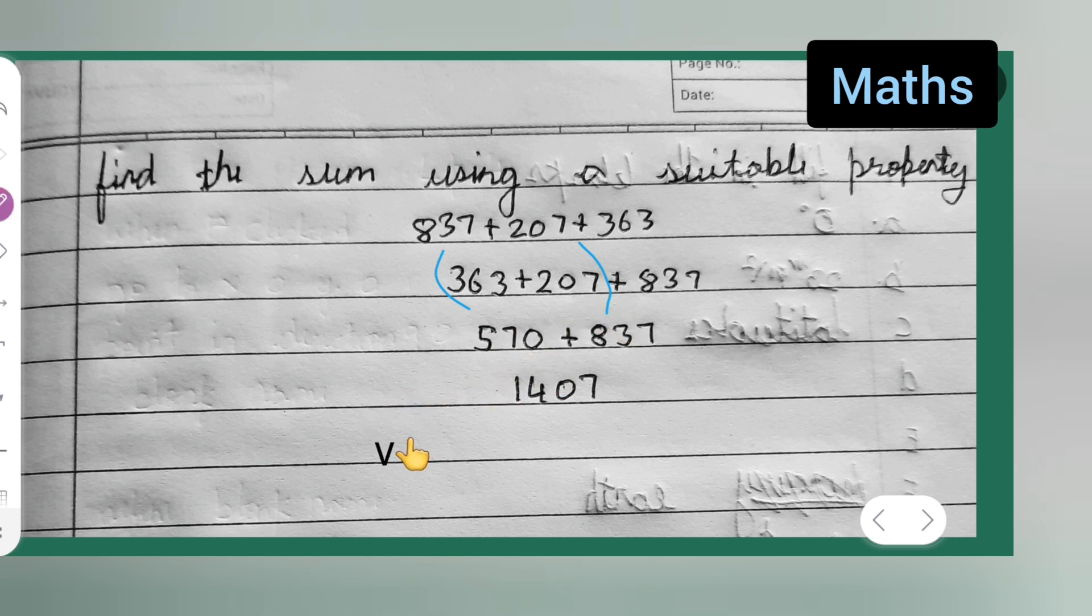3, 63 plus 2, 0, 7. 7 plus 3, 10. 7 and 3 plus 2 will be 5. So, 570 plus 837.